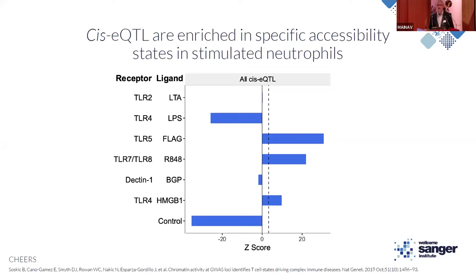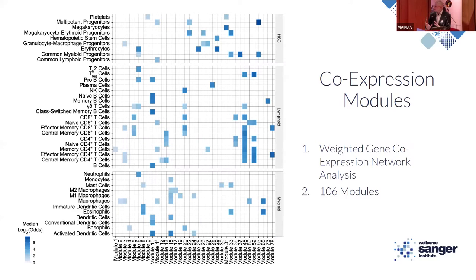These ligands are sepsis-relevant, targeting toll-like receptors that detect gram-positive and gram-negative bacteria, single-stranded RNA from viruses, and damage-associated molecular pattern signals. That was our work surrounding cell type regulation and sepsis.